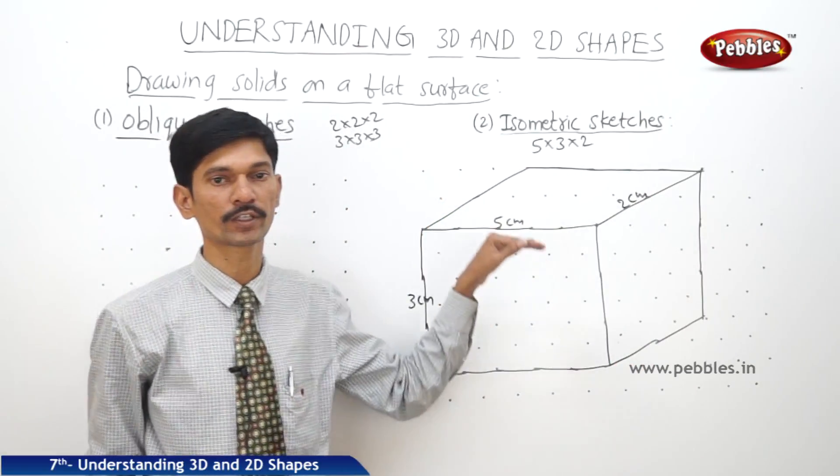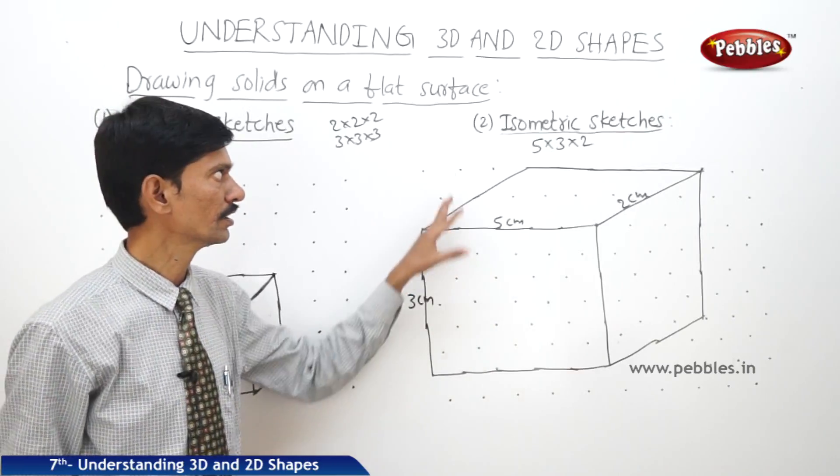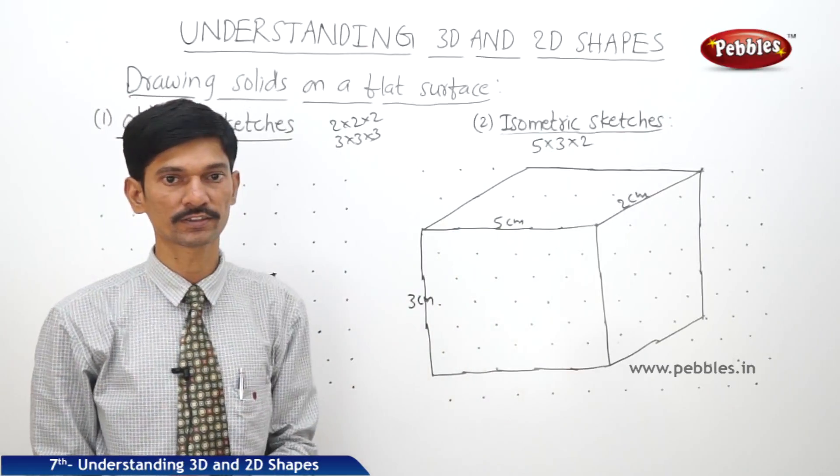So in this way we can show any solid object using isometric sketches. Thanks, guys.